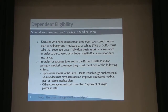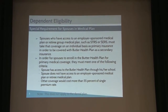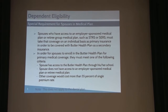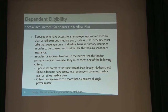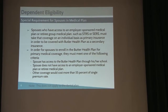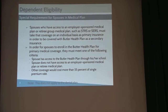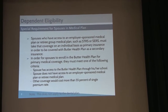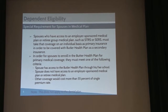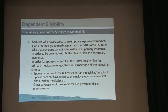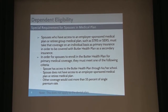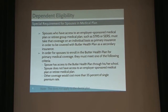Just some additional information about the requirements to carry your spouse under the health insurance plan. If your spouse has access to another plan through their employer or a qualified retirement plan, then they have to take at least a single plan through their employer as primary. You can continue to carry them on our plan as secondary. For most people, if you have to carry your kids on the plan, you may as well put them on as secondary since there's no additional premium cost.